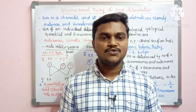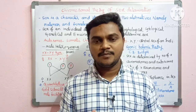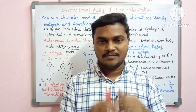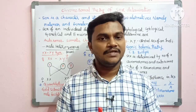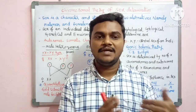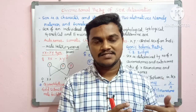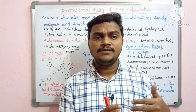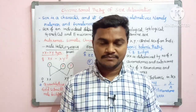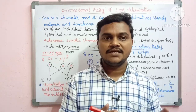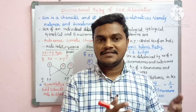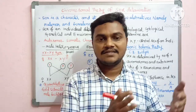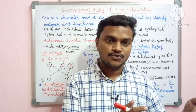The chromosomal theory of sex determination is based on two basic factors. We have two characteristics — male and female — and two types of chromosomes. Autosomes are somatic chromosomes, while allosomes are sexual chromosomes. We have two different factors in control of chromosomes.